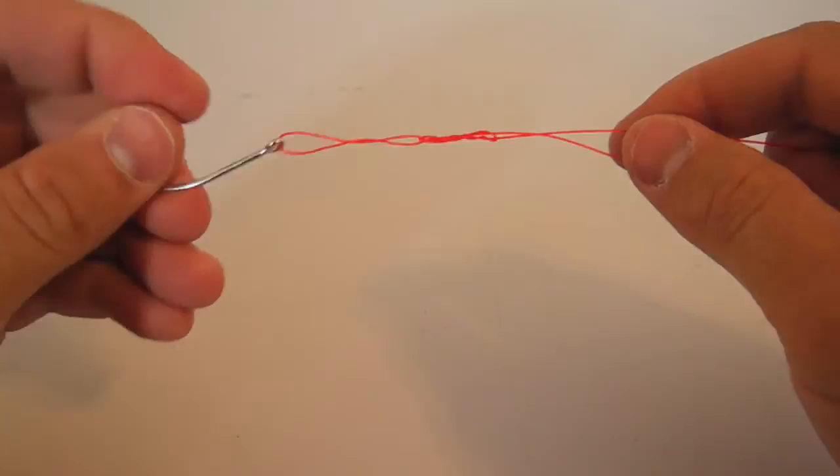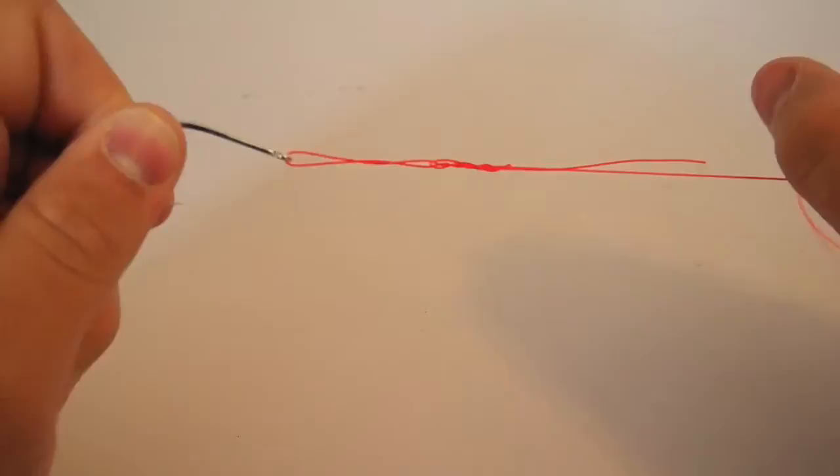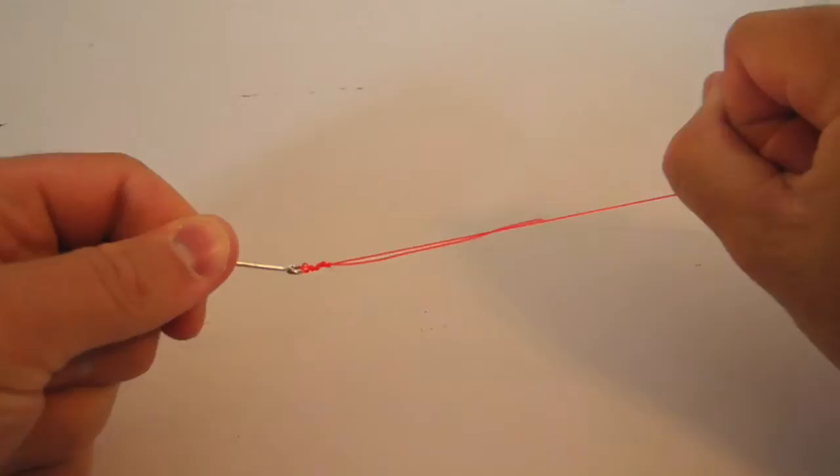And then what I'm going to do is actually take the standing line, the long line, and wet it. I'm going to spit on that knot so I reduce the friction. I'm going to pull everything down.